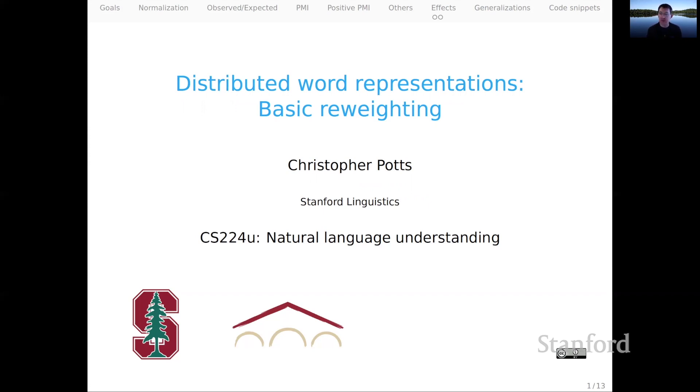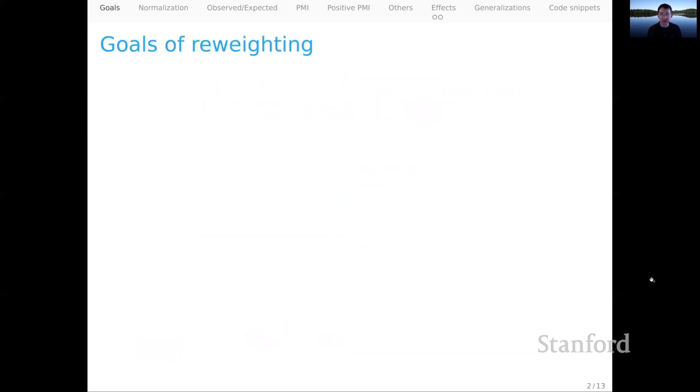Essentially, I feel like we've been faithful to the underlying counts in our matrices for too long. It's time to start messing with them. Here's some high-level goals that we have for reweighting. We would like in these matrices to amplify the associations that are important and trustworthy and unusual, while correspondingly deemphasizing the things that are mundane or quirky or reflect errors or idiosyncrasies in the data that we use.